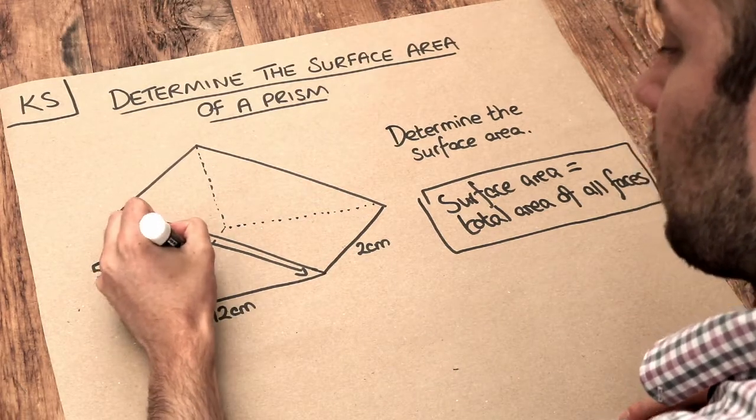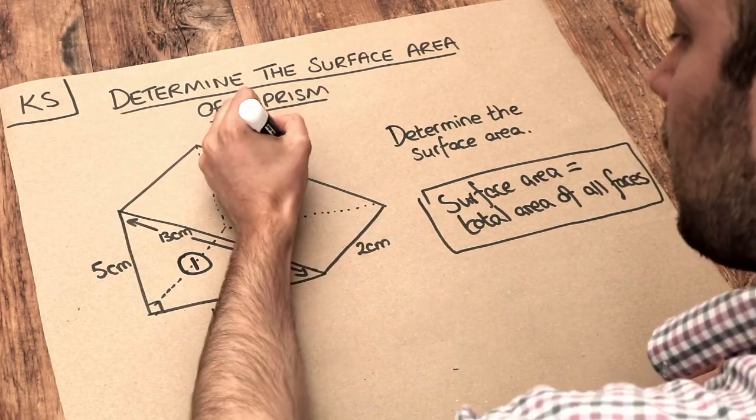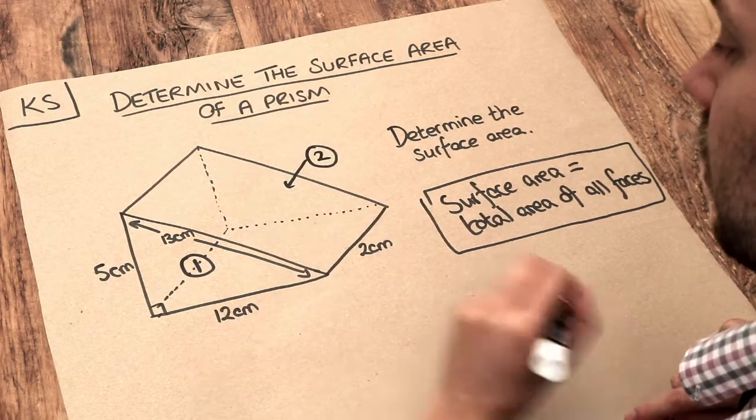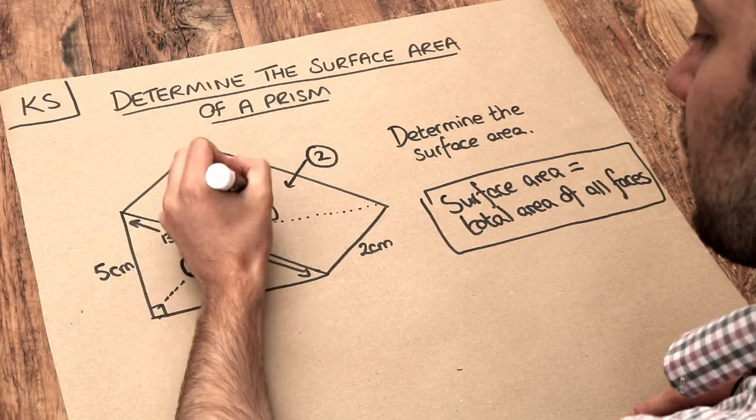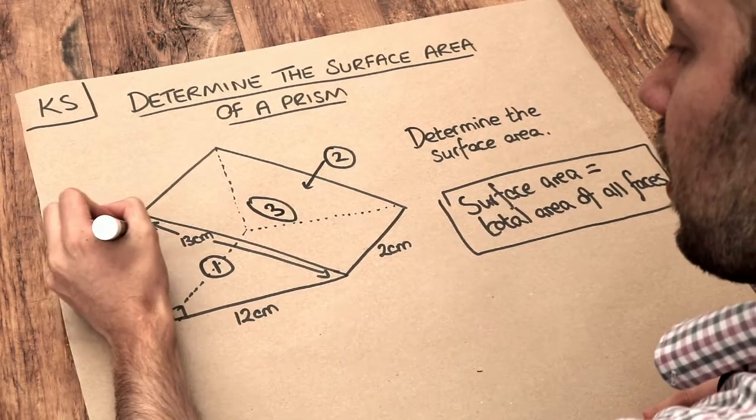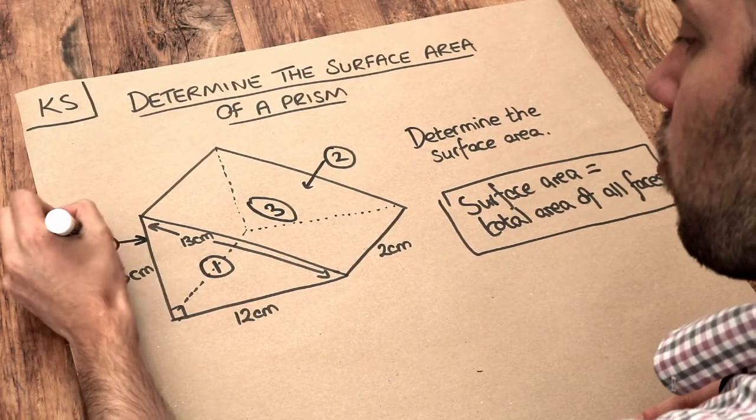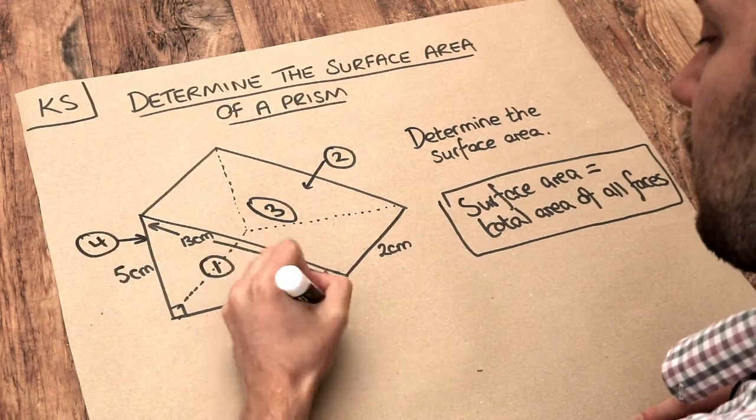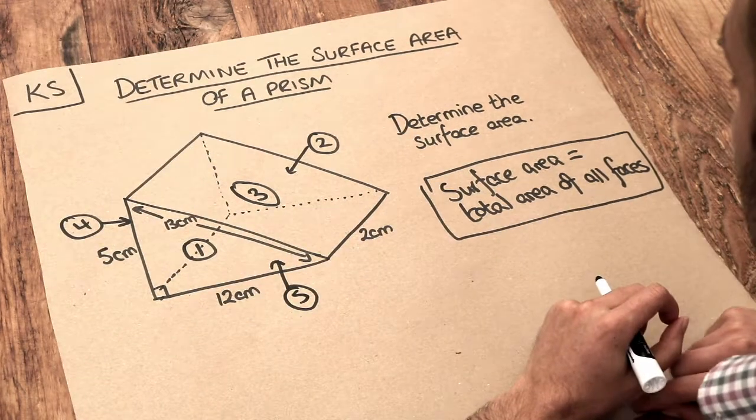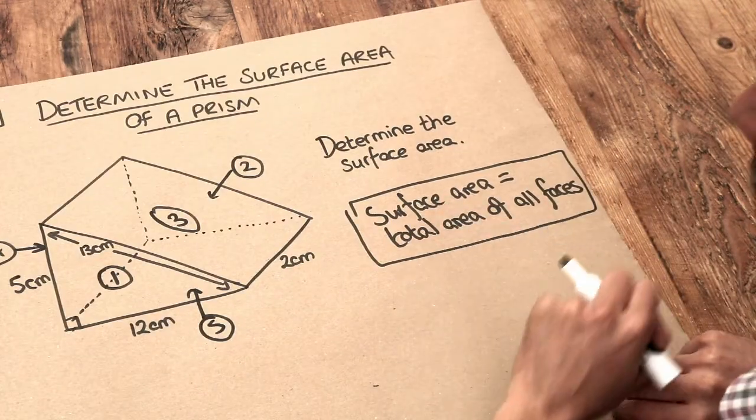So let's say this front face is face one, this back face here is face two, this face coming up like this is face three, the back face is four and the bottom face is five. Let's find the area of each of those faces and then we're just going to add them up.